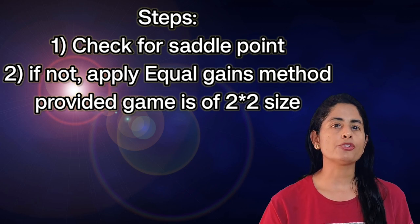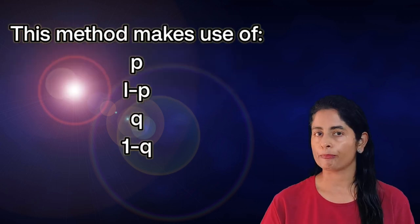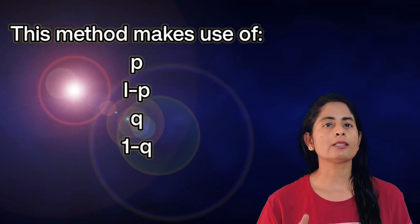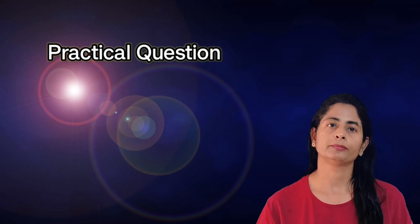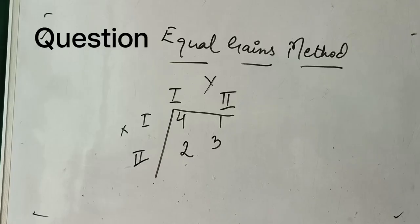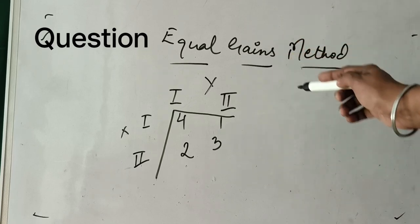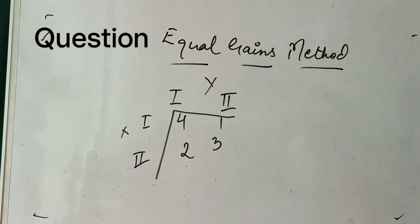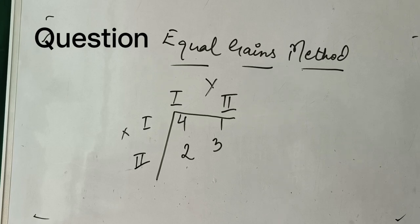This method makes use of P and Q, and with the help of probabilities we find out the value of gain. Now let us see this with the help of one practical question. This is the practical question in front of you which we are going to solve with the help of the equal gains method, another name for which is the probability method.